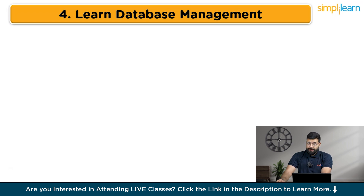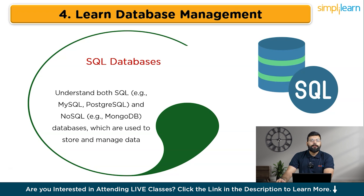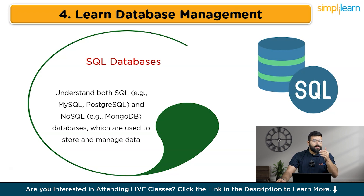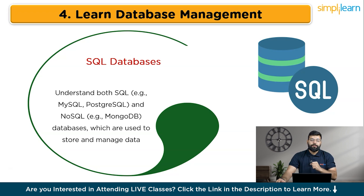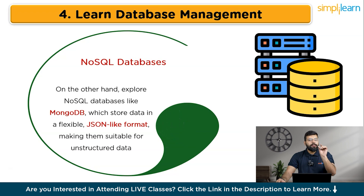To become a proficient full-stack developer, understanding database management is essential. Databases are critical for storing and retrieving the data that your application uses. You can start with SQL databases like MySQL and PostgreSQL, which use structured query language to manage data in a structured format of tables, rows, and columns. Learn how to create and manage databases and write queries to insert, update, delete, and retrieve data. Designing relational databases for various applications is crucial — for instance, you can design a database for an online bookstore with tables for books and authors, which helps you understand how to structure data and perform operations like joins and aggregations. On the other hand, explore NoSQL databases like MongoDB, which store data in a flexible JSON-like format, making them suitable for unstructured data. Gain skills in creating and managing collections and documents, and perform CRUD operations to handle data efficiently.